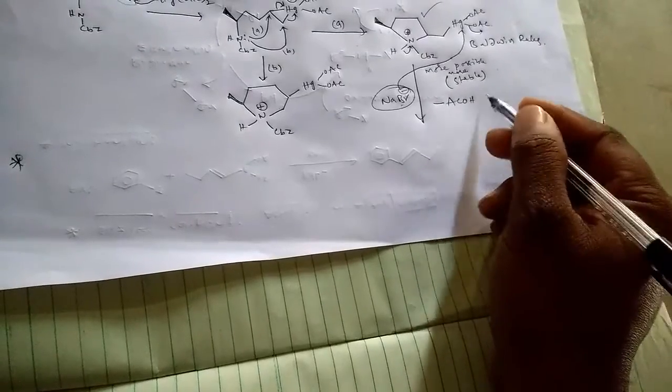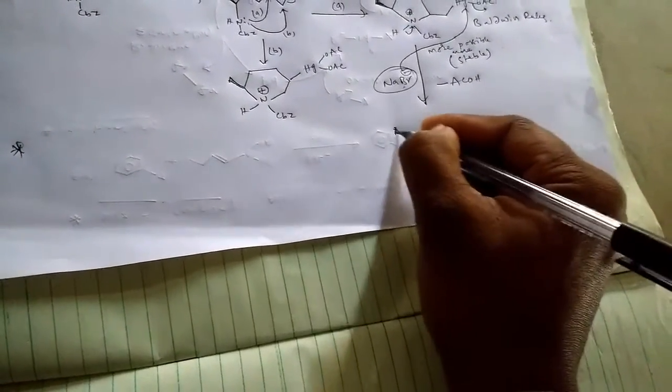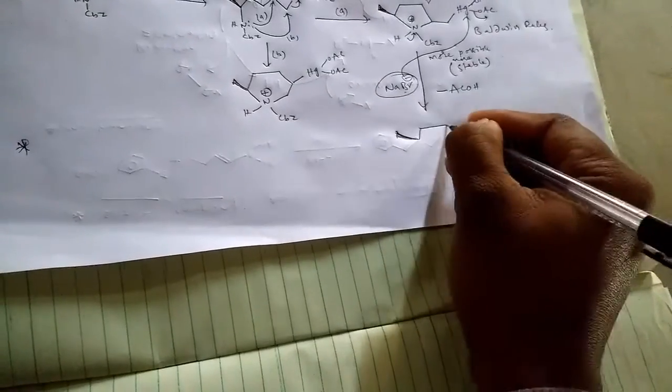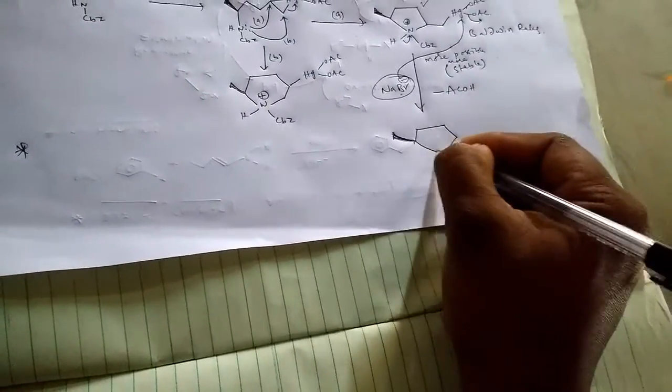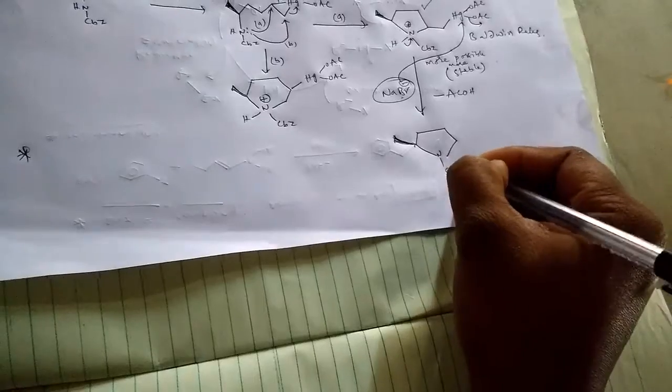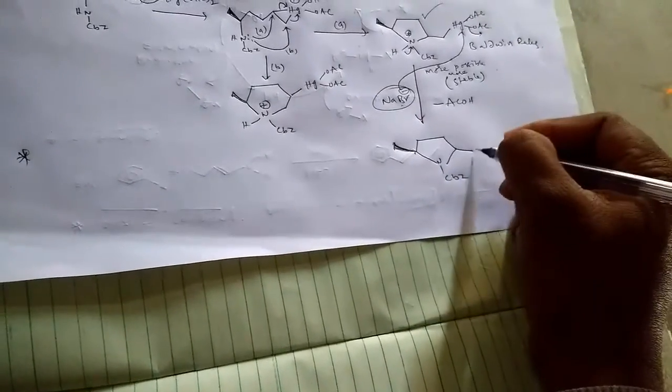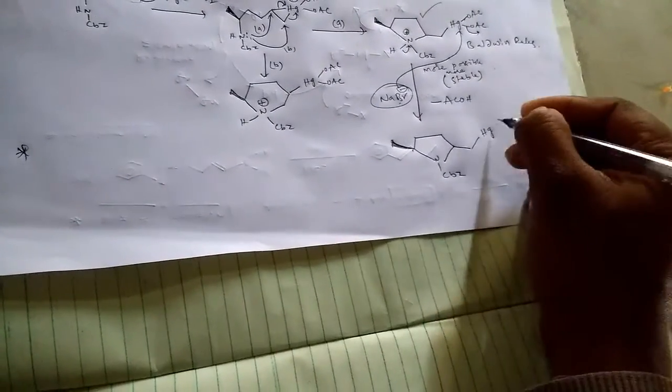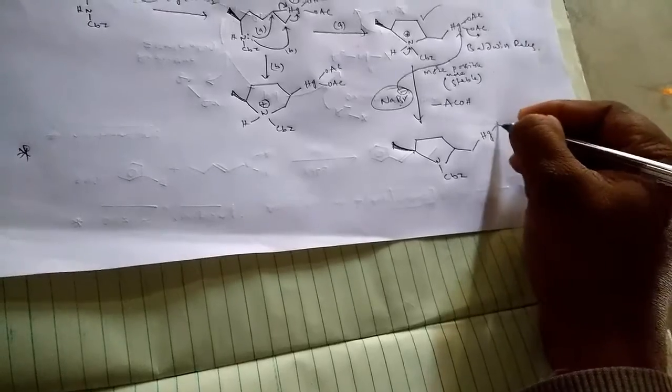So we can get the product. That means next step product is like this: CBz, mercury, and bromine. So this is the next step.